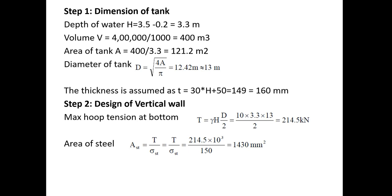The volume is 400 cubic meters. Area of tank = Volume / Height = 400 / 3.3 = 121.2 m². Using πD²/4, the diameter D = 12.42 m, rounded up to 13 m. The wall thickness is assumed as 30×H + 50 = 30×3.3 + 50 = 149 mm, so an effective thickness of 160 mm is adopted.